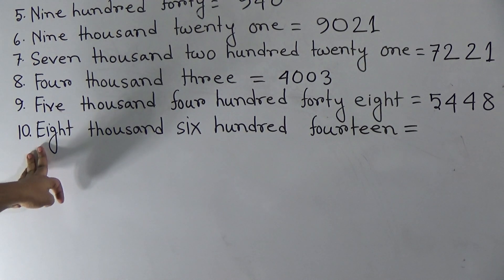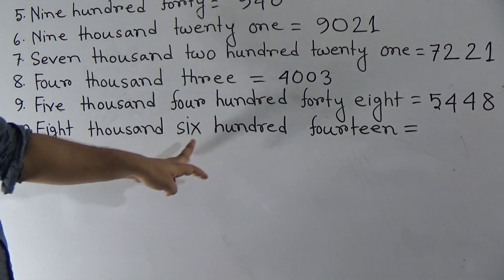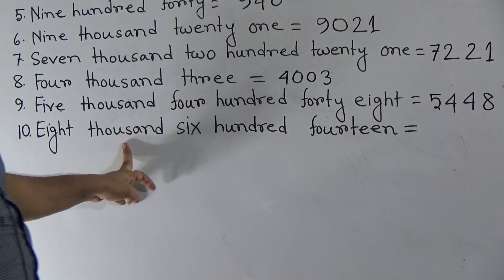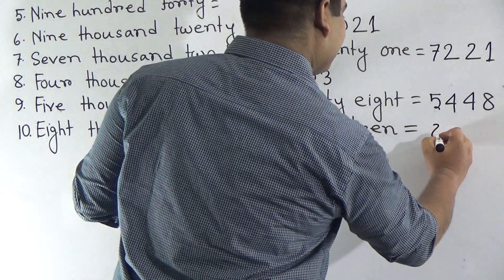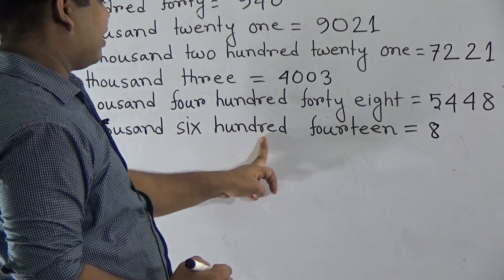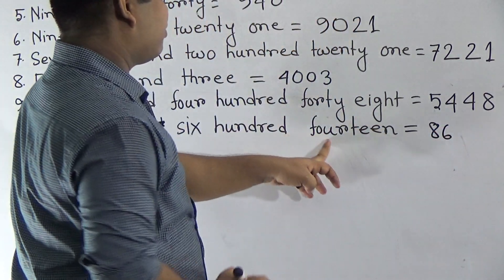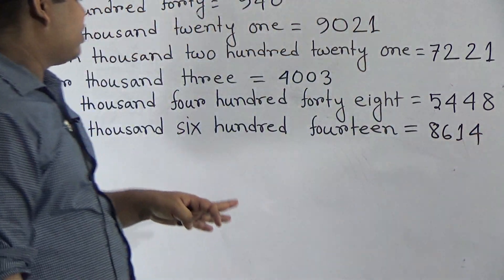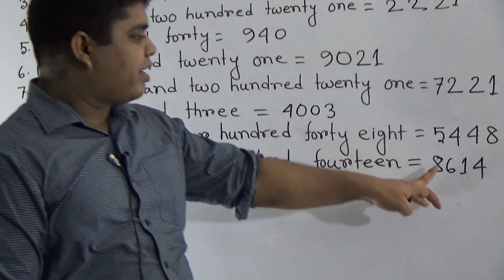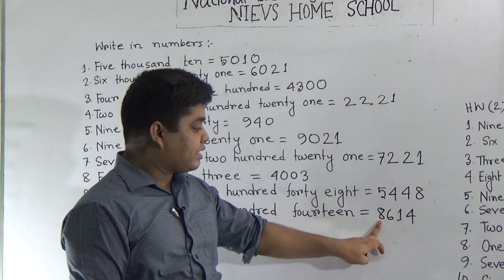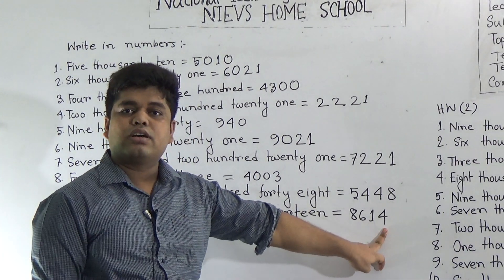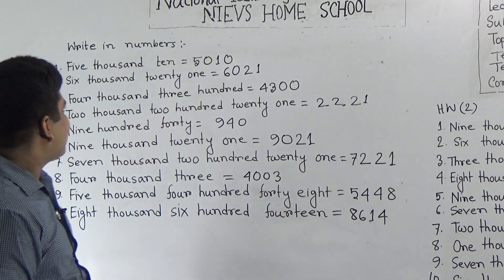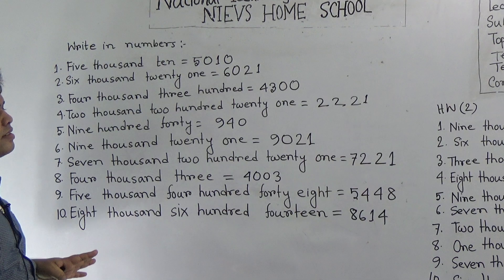And our last number is 8614. 8000. So, write 8 first. Then, 600. Write 6. Then, 14. 8614. And this is our today's CW.